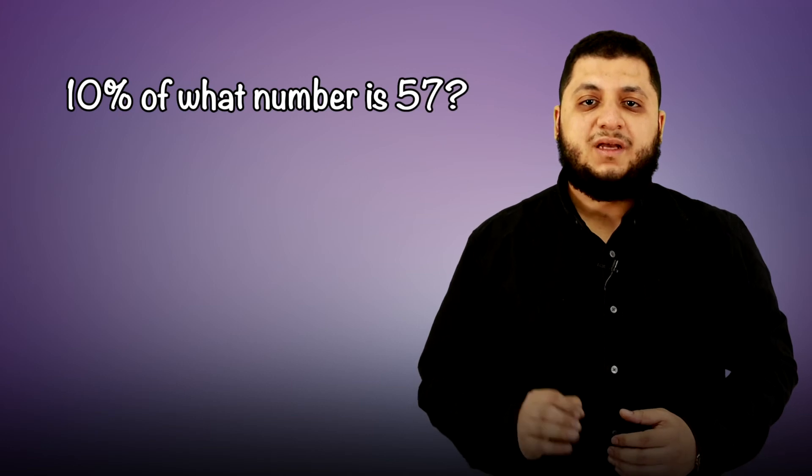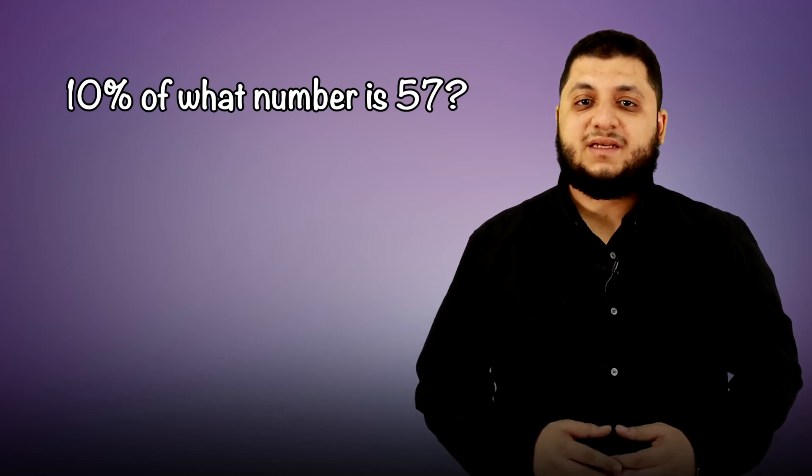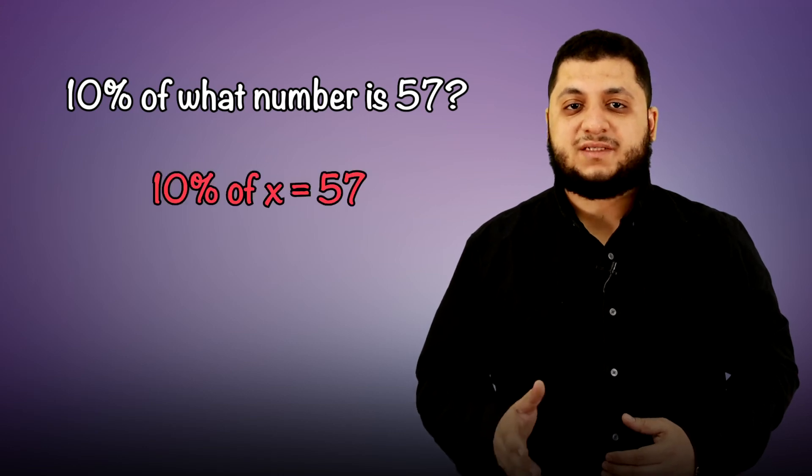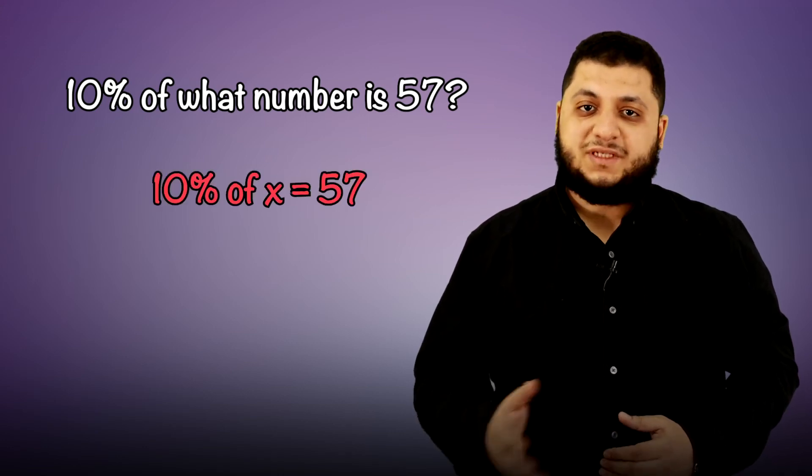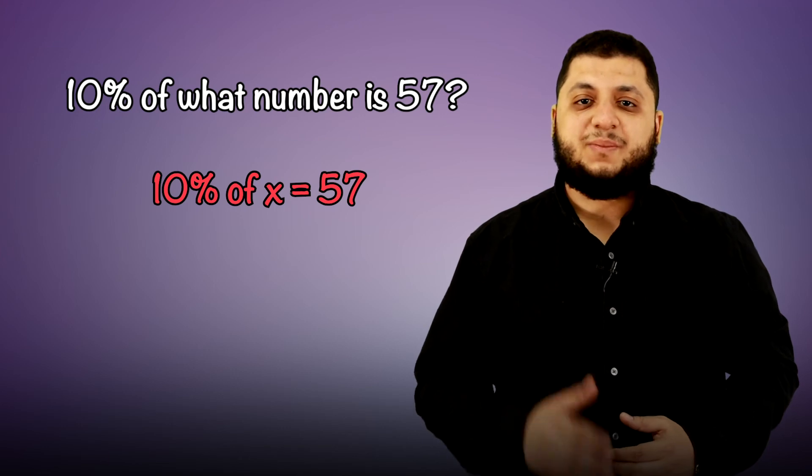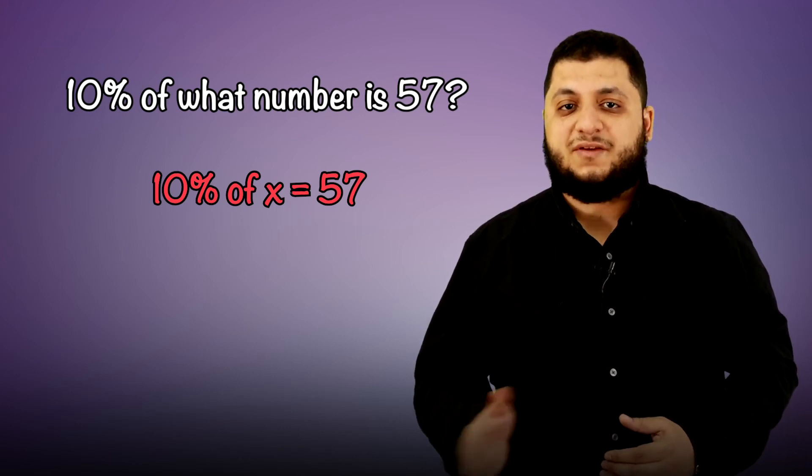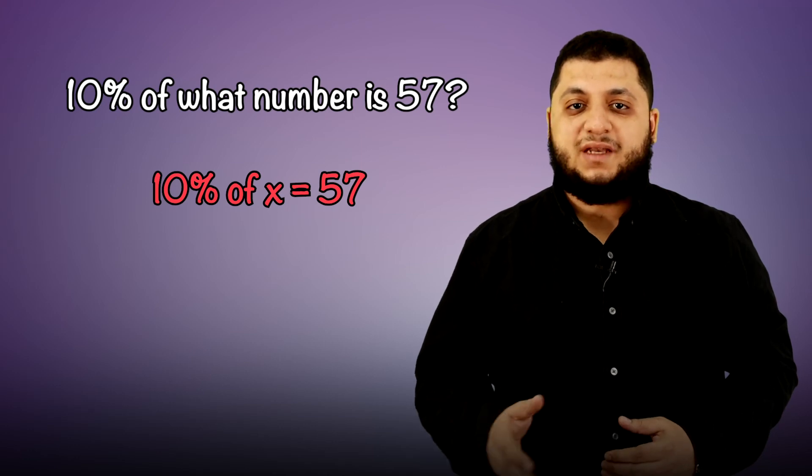Third type asks about total or whole number. Example: 10 percent of what number is 57? Let x be the unknown number. Then we can write the equation: 10 percent of x equals 57. As we said before, the word 'of' means multiplication, so 10 percent multiplied by x equals 57. 10 percent means 0.10 or 10 over 100.